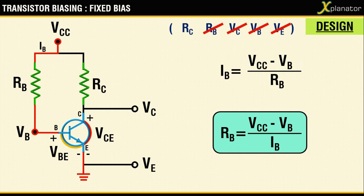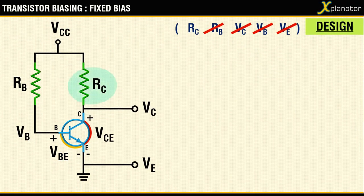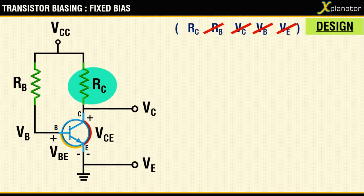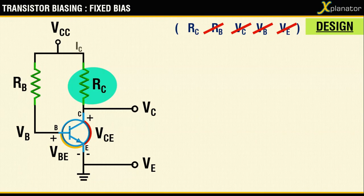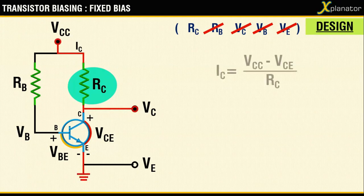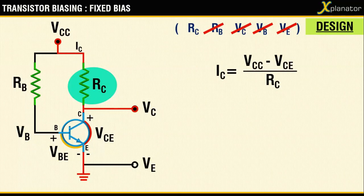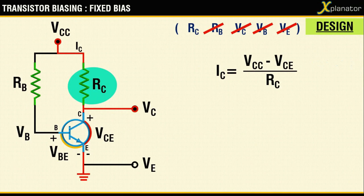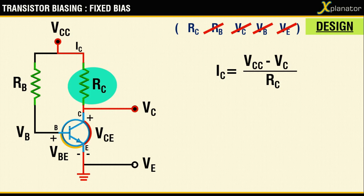And the last term, that is RC, can be calculated in the similar fashion. Consider the output loop and write a KVL for it. Substitute VCE by VC and rearrange the terms to get (VCC - VC) upon IC.